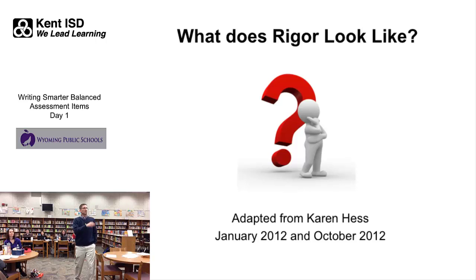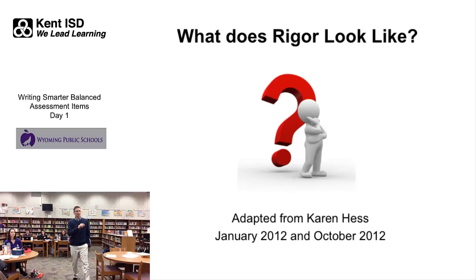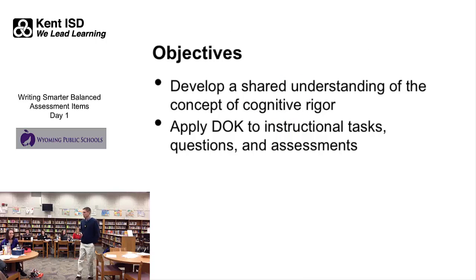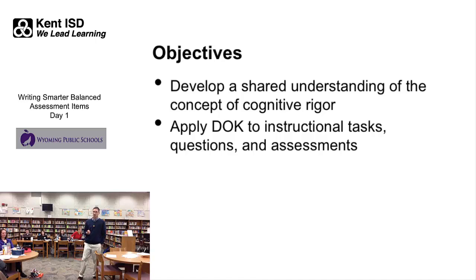A lot of the slides I'm about to go through are adapted from different presentations Karen has actually done. The slides I'm particularly referencing are from two different pieces, so just to make sure to give credit where credit is due. The objectives of this next portion have to do with getting a shared understanding of cognitive rigor — what is it, what does it mean, what does it look like, and how is it put together?